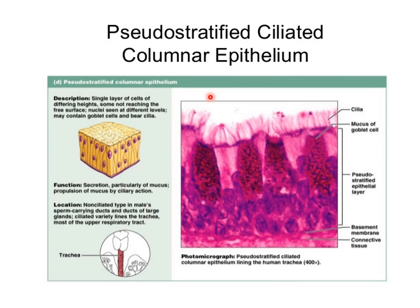The pseudo-stratified ciliated columnar epithelium consists of a single layer of cells, but all the cells rest on the basement membrane. They do not reach the apical surface, and the level of the nuclei is at different levels, so it gives a false appearance of being stratified. The cells are of different types: tall columnar cells, short basal cells, and also a few goblet cells in between.